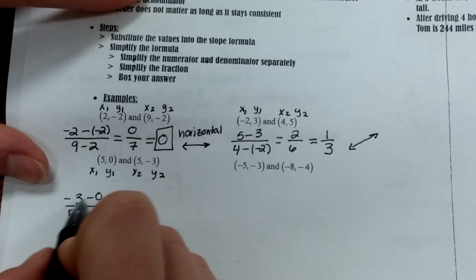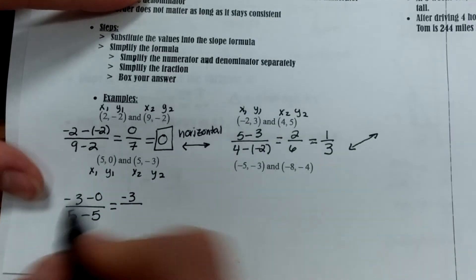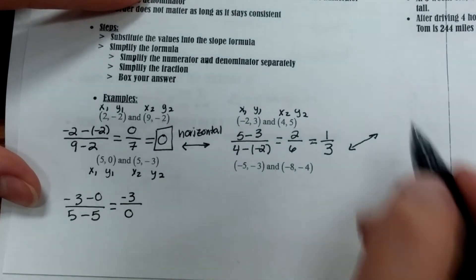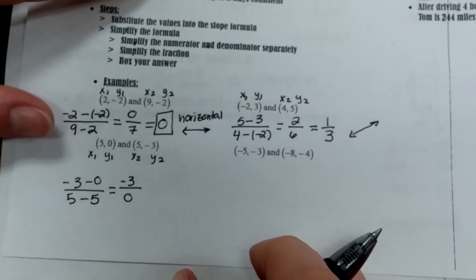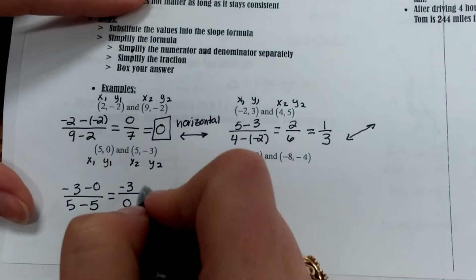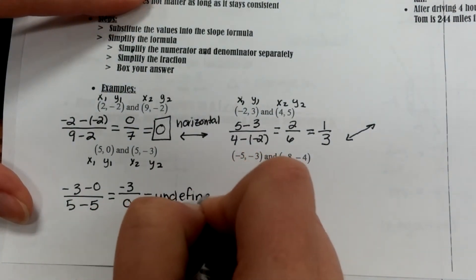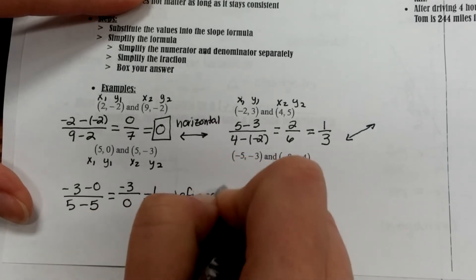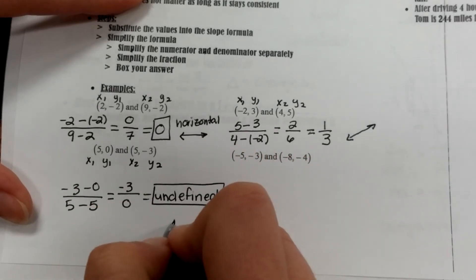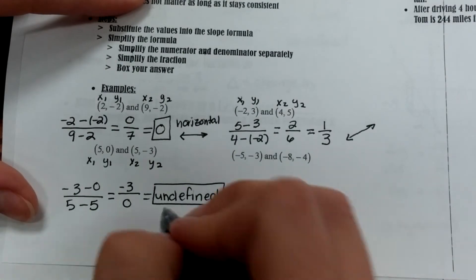So negative 3 minus 0 gives me negative 3, and 5 minus 5 gives me 0. Remember, division by 0 is undefined. So the slope of this line would be undefined. And an undefined line is a vertical line, or a line with an undefined slope is vertical.